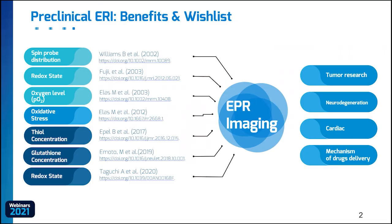As you already know from our previous webinars, the ERI solution is based on the electron paramagnetic resonance phenomenon, where the source of the signal are substances that contain unpaired electrons, such as free radicals, transition metals, or — as in the case of in vivo studies — so-called spin probes. The uniqueness of the method is that apart from the simple distribution of the spin probe in the animal's body, it is also possible to obtain spectral information that reflects the tissue microenvironments.